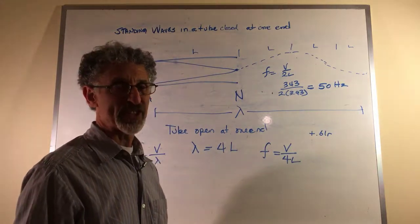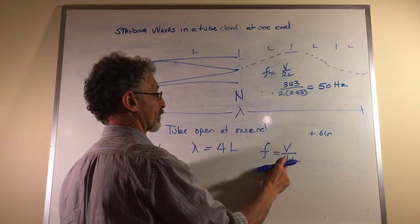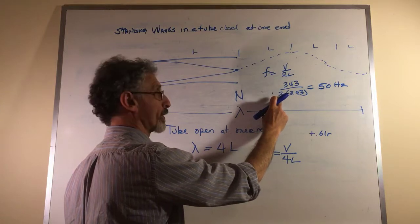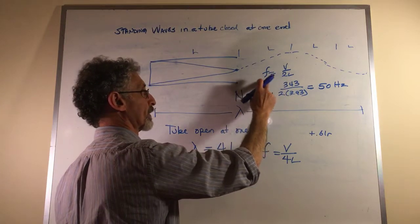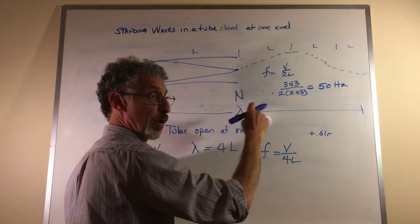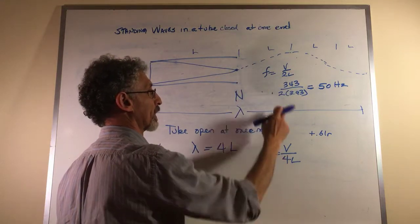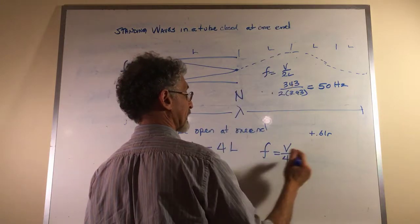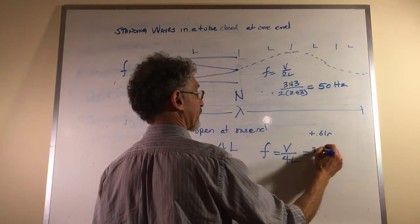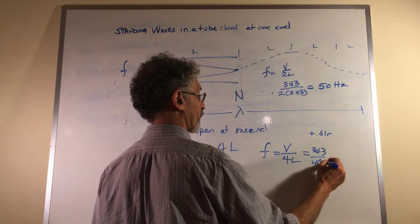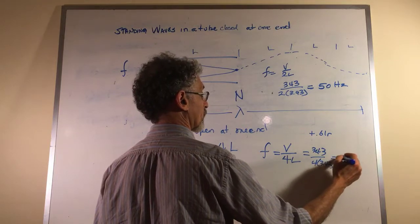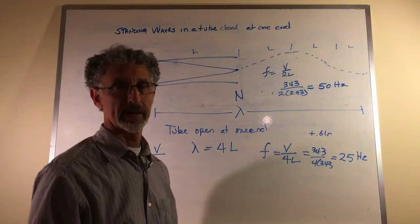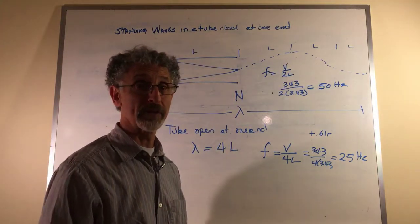If we change the 2L to 4L, this becomes larger. If this is larger, this becomes lower. How much? Twice as low. So for this, 343 over 4 times 3.43 would equal 25 Hertz. That's one octave lower.